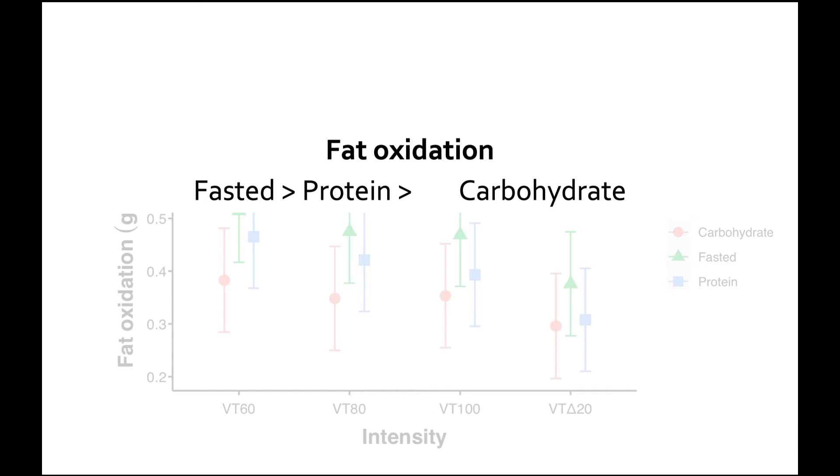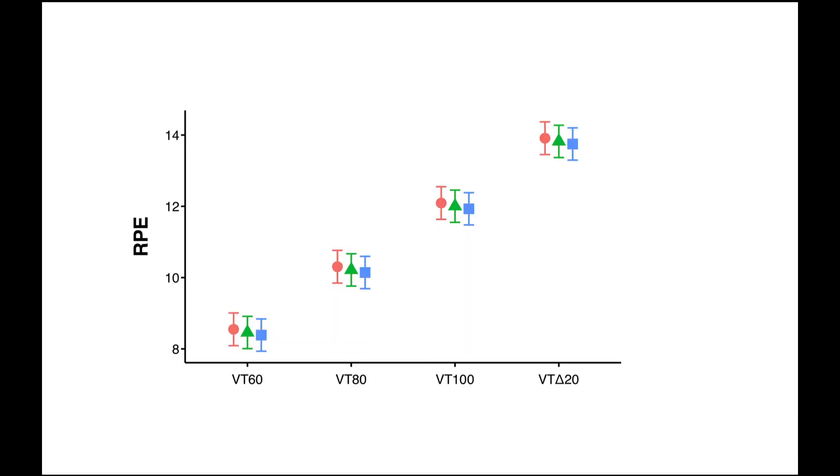We also measured how hard it was for the athletes to perform these. RPE is rating of perceived exertion, and that's on a scale between 6 and 20. You can see here there is no difference in how hard the workout felt between the different treatments. These are the four different intensities and we see that it goes from about 8 or 9 out of 20 up until about a 13 or 14 out of 20, but no differences between groups.